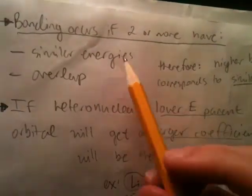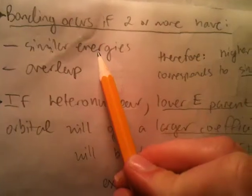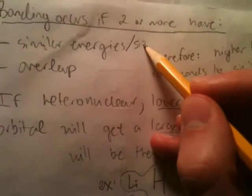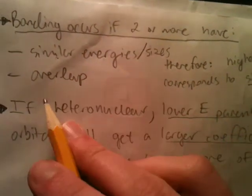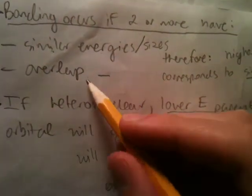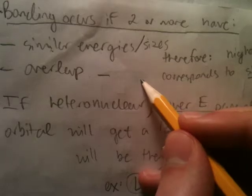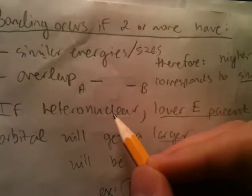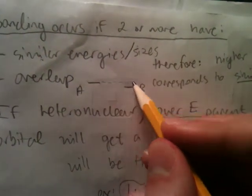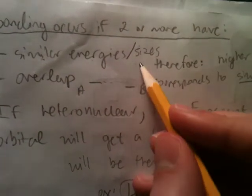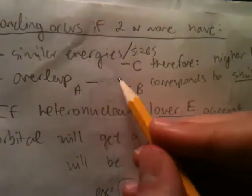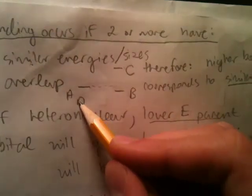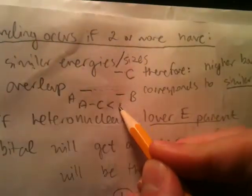Bonding occurs if two or more atoms have similar energies — or similar sizes and energies — and they overlap. These energies overlap. So if I had some energies here for atom A and atom B, these two overlap pretty well. If atom C was way up here, there's hardly any overlap. So the A-C bond is less likely to occur than the A-B bond.